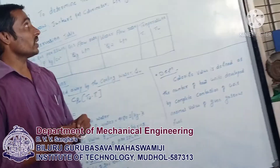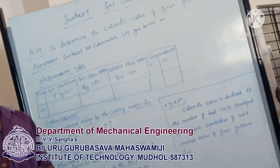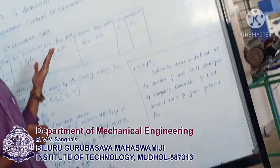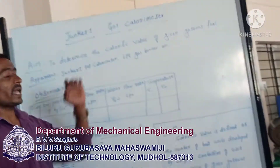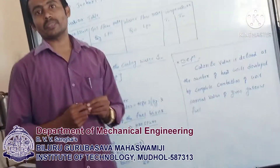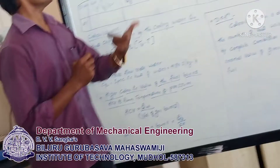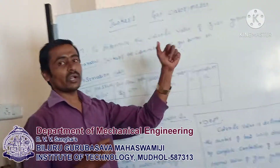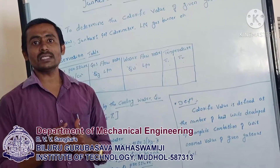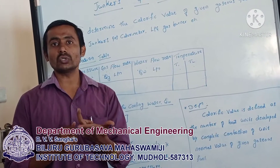The calorific value is of three different types. The first one is gross calorific value, the second one is net calorific value, and the third one is for gaseous fuels using the Junkers gas calorimeter. One unit of fuel is the fuel in solid form.